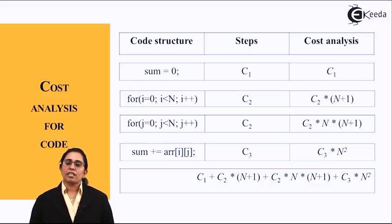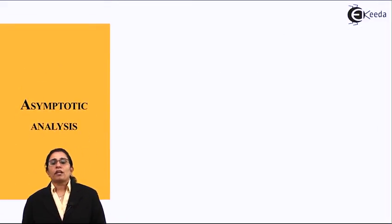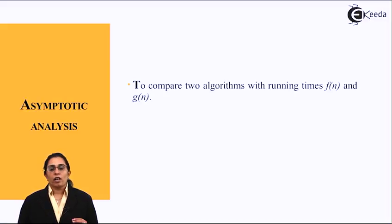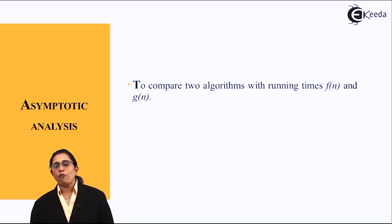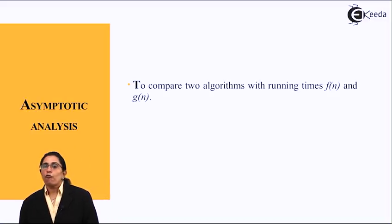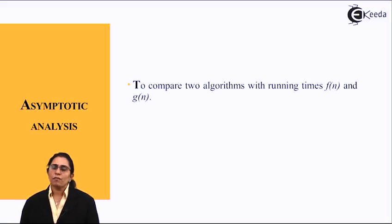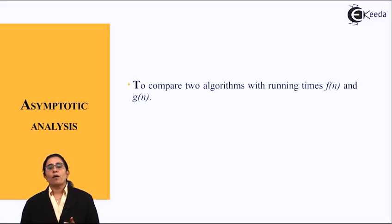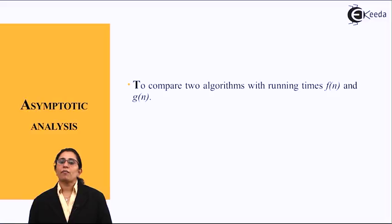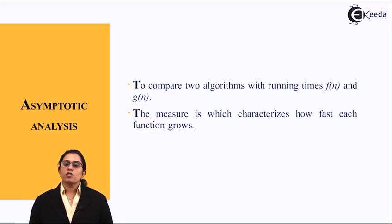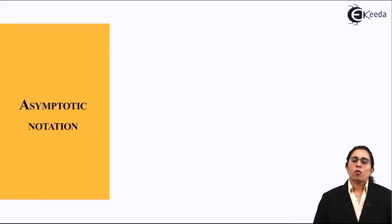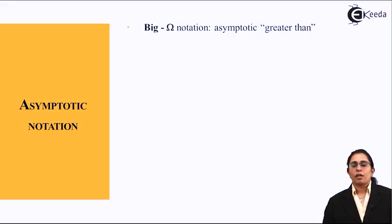Now, what is asymptotic analysis? After performing cost analysis for a particular code, we use asymptotic analysis to compare two algorithms with running times expressed as functions f(n) and g(n). This represents the growth of a function — as complexity increases with time, we see how running time affects the growth of a function. The measure that characterizes how fast each function grows is called asymptotic notation.